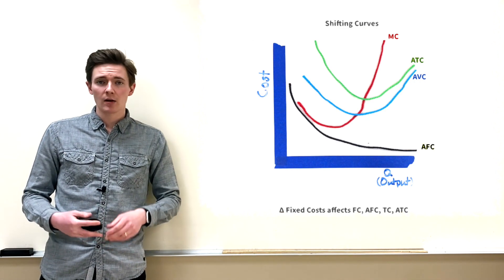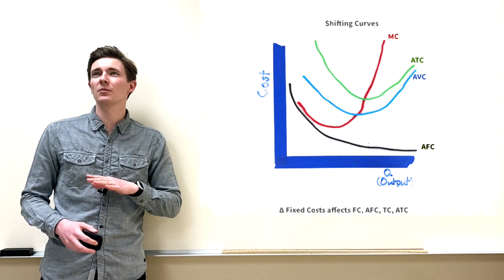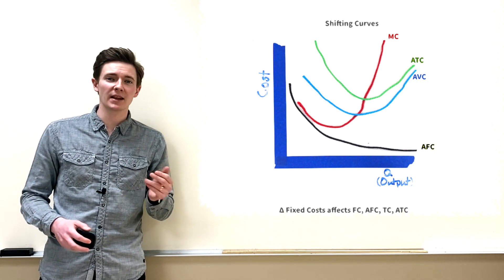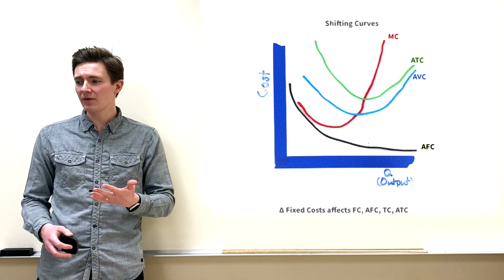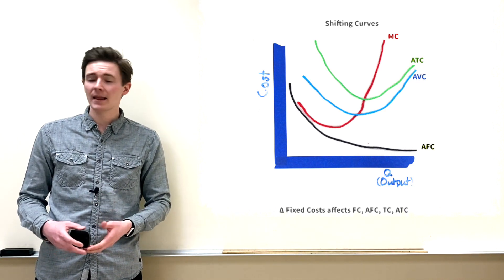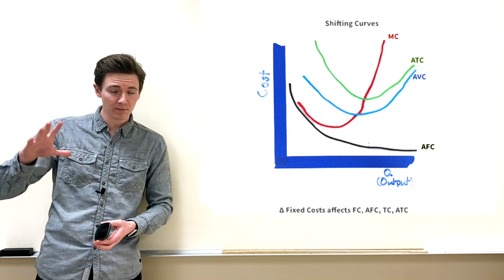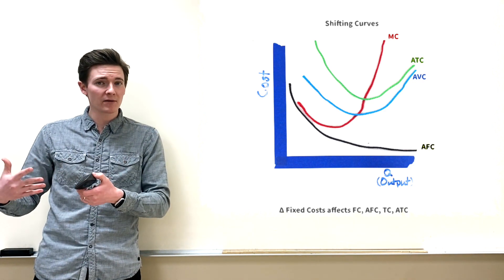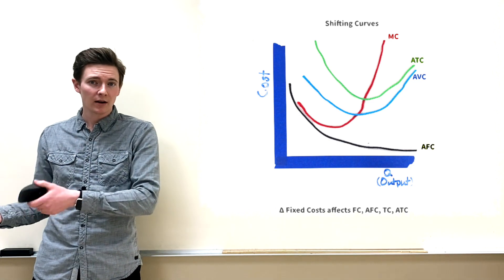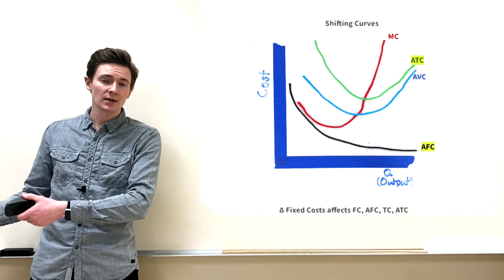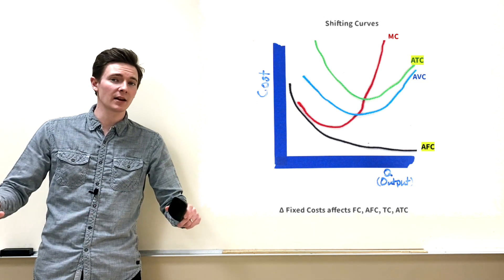Now let's talk about shifting these curves. There are two possible scenarios. If something affects your fixed costs — a lump sum — that will also affect average fixed cost, and since total cost and average total cost include fixed costs, those will shift too, but nothing else.